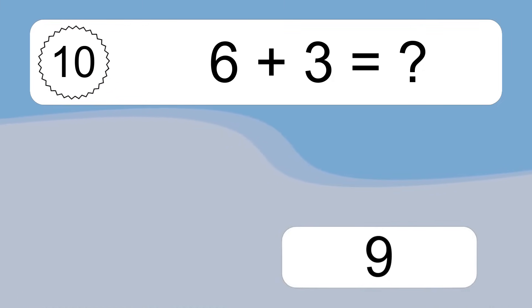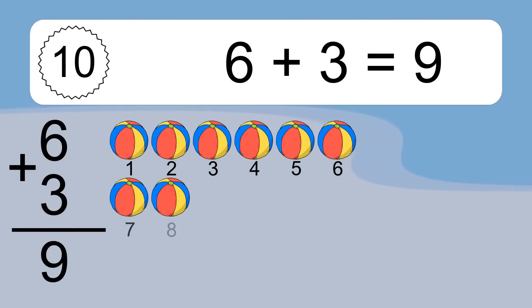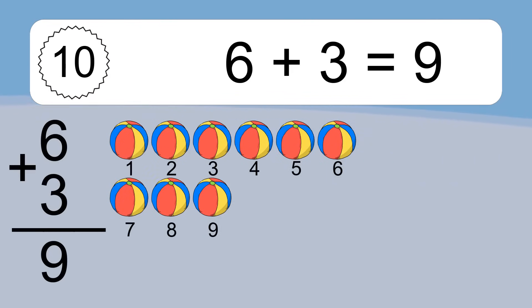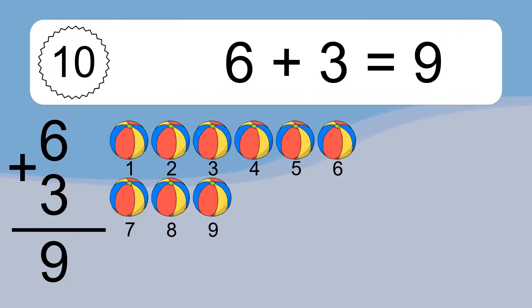6 plus 3 equals 9. Let's count it. 1, 2, 3, 4, 5, 6, 7, 8, 9.